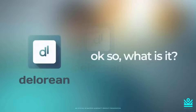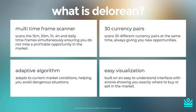So what is the DeLorean? What is this scanner that you've been hearing about? First things first, it is a multi-timeframe scanner. It scans the 15-minute, 30-minute, 1-hour, 4-hour, and daily timeframes simultaneously, ensuring you do not miss a profitable opportunity in the market.